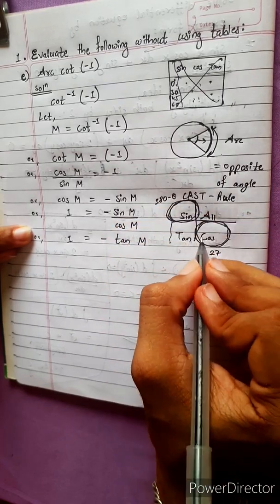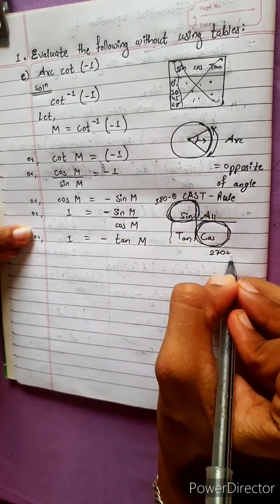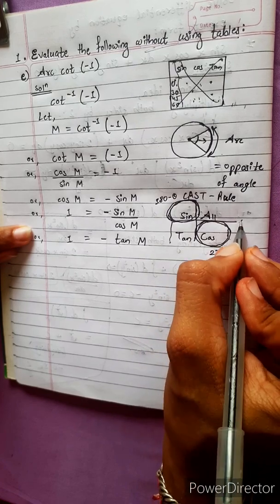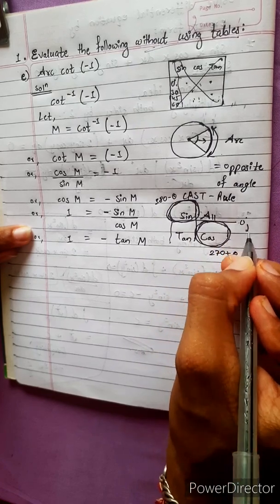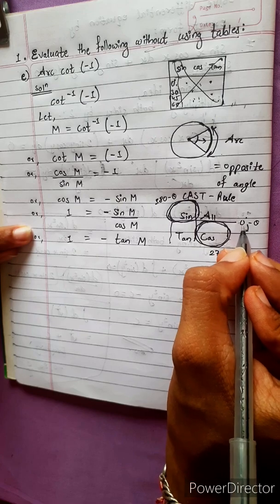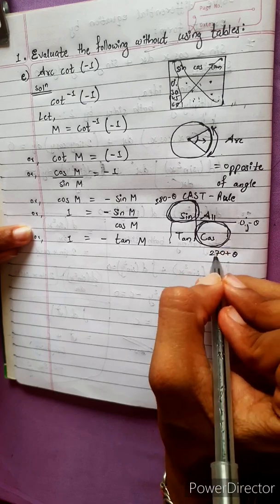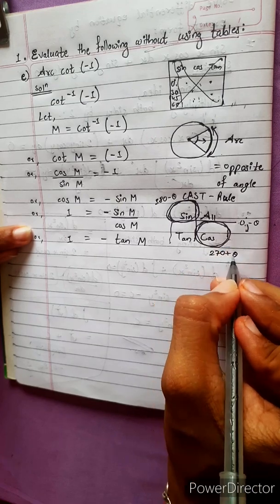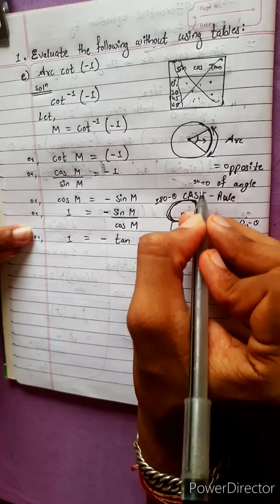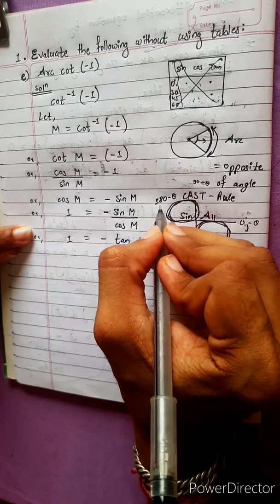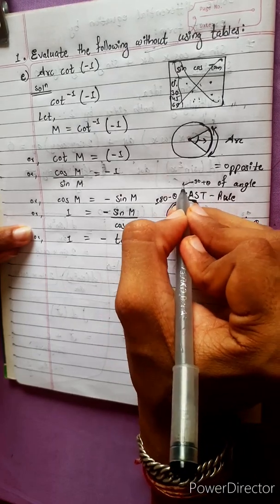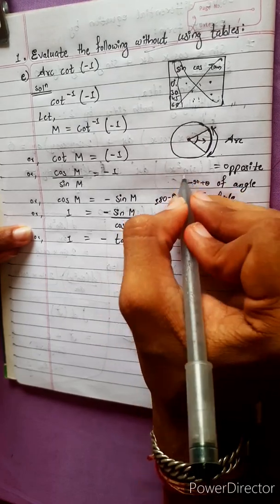Considering the key angles: 60°, 90°, 270°, and 90° again — identifying the correct quadrant for the angle.